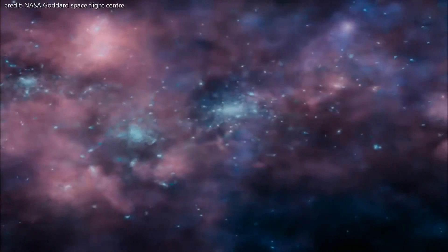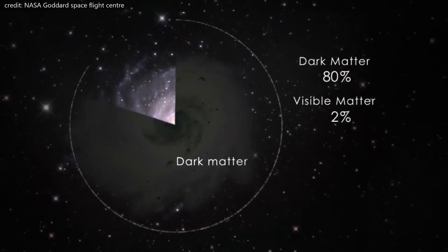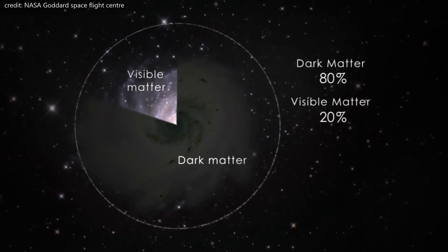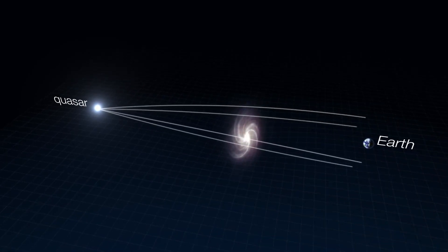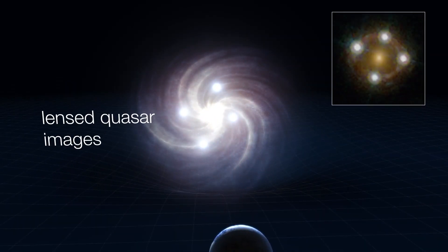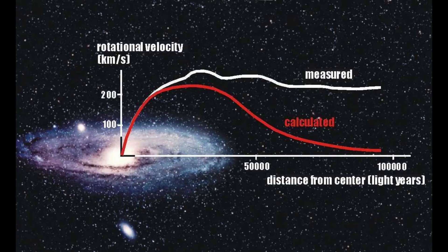Dark matter is thought to be the undetectable matter that is responsible for the extra mass that a galaxy has. Phenomenon like the gravitational lensing due to galaxies, rotation curves of galaxies are well explained by the dark matter hypothesis.